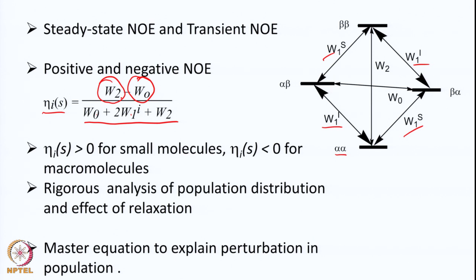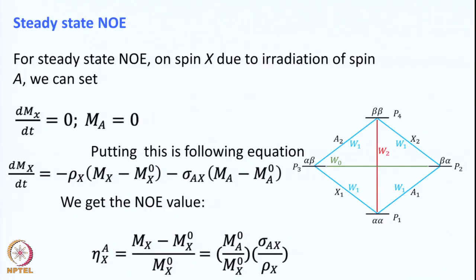We have seen that the double quantum transition omega 2 and the zero quantum transition omega 0 play an important role in giving the NOE enhancement. For small molecules, positive NOE is observed and for large molecules negative NOE is observed. For positive NOE, omega 2 majorly contributes, and for negative NOE, omega 0 majorly contributes. We developed a master equation to explain the perturbation in population. Now we will do a more rigorous analysis to explain steady state NOE.